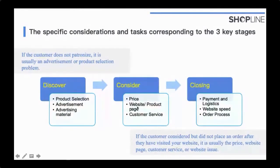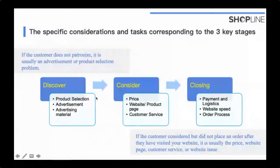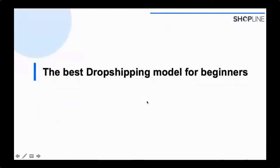If customers visited your website but didn't place an order, it could be your pricing, your product page details not being attractive or clear enough, or customer service not providing the answers they wanted. If they reached the checkout stage but gave up, it could be because your payment options weren't available or logistics couldn't fulfill the shipment. You need to identify which stage the problem happens at, then make specific improvements to tackle it.